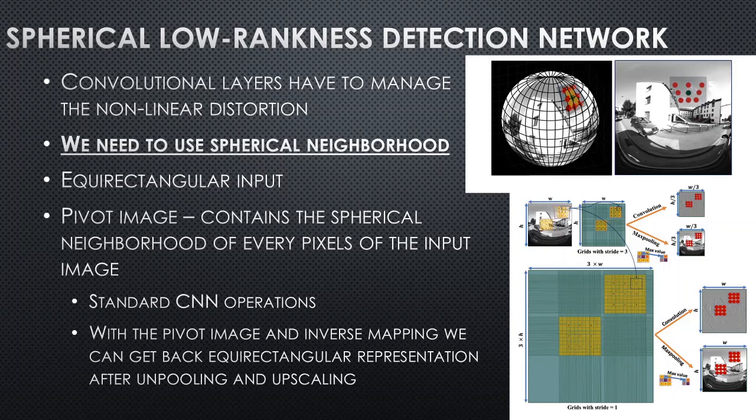The network is spherical because the convolutional layers have to manage the nonlinear distortion, which means we need to use the spherical neighborhood. The network input is an equirectangular image, and the network uses a pivot image. In this pivot image, the pixels of a spherical neighborhood are represented as regular neighboring pixels. We can then use standard CNN operations, and with the pivot image and the inverse mapping, we can get back the equirectangular representation after unpooling and upscaling.